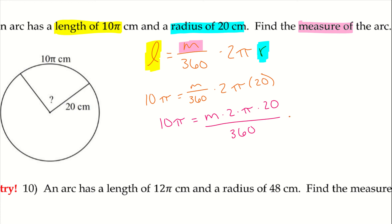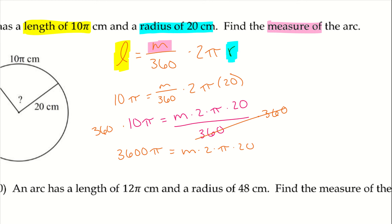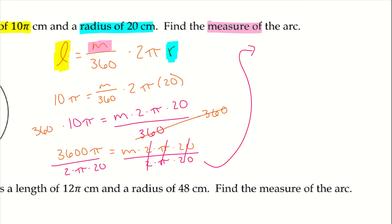Since I'm trying to find M, I need to move things over. Multiply both sides by 360, giving 3600π equals M times 2 times π times 20. Now divide both sides by 2, π, and 20 — those terms all cancel out, and the π on the left also cancels. Plugging it into a calculator, we get 90, so M equals 90 degrees.